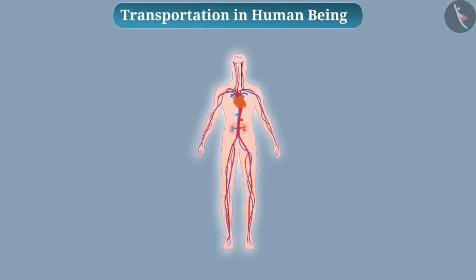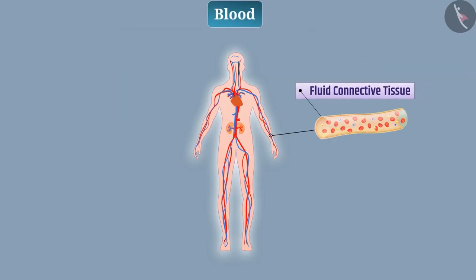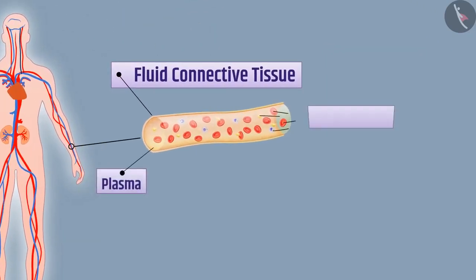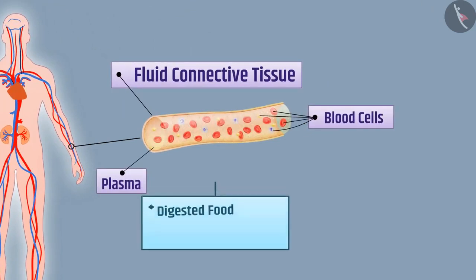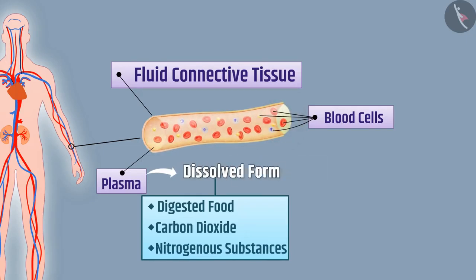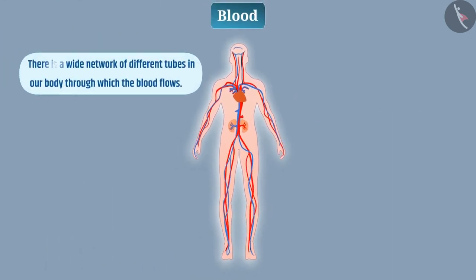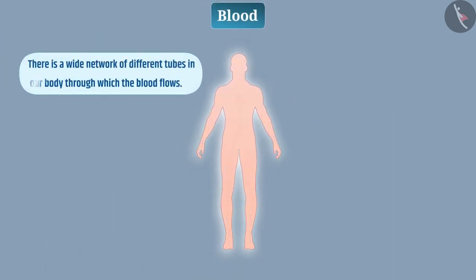Blood carries out transportation in humans. Blood is a fluid connective tissue made up of plasma and blood cells. Plasma carries digested food, carbon dioxide, nitrogenous substances, and other hazardous substances in dissolved form, while red blood corpuscles carry oxygen. There is a wide network of different tubes in our body through which blood flows, called blood vessels.